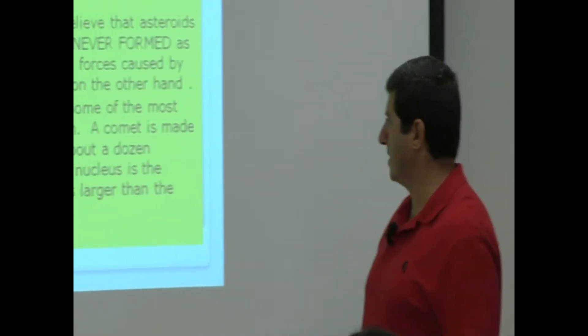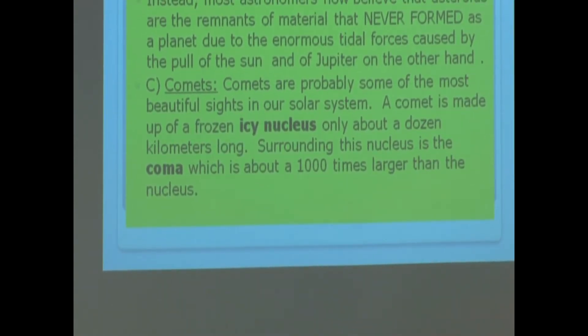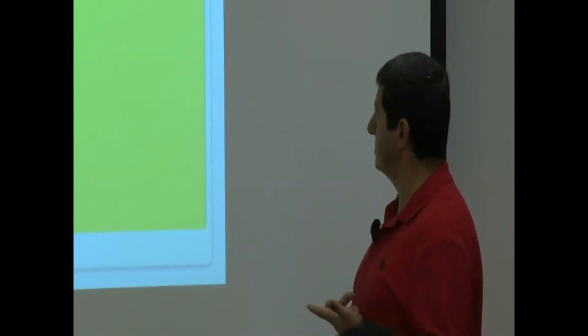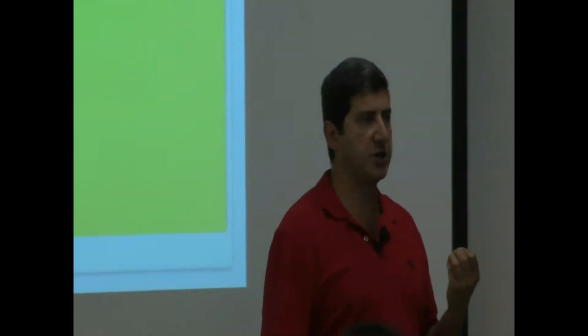Surrounding this nucleus is the coma, which is about a thousand times larger than the nucleus. And then as the comet starts coming towards the sun, this nucleus starts heating up and then forms a tail. The coma is a vast cloud of gases such as water vapor, carbon dioxide, carbon monoxide, hydrogen, sulfur, and carbon, and it is about seven times the diameter of the Earth.